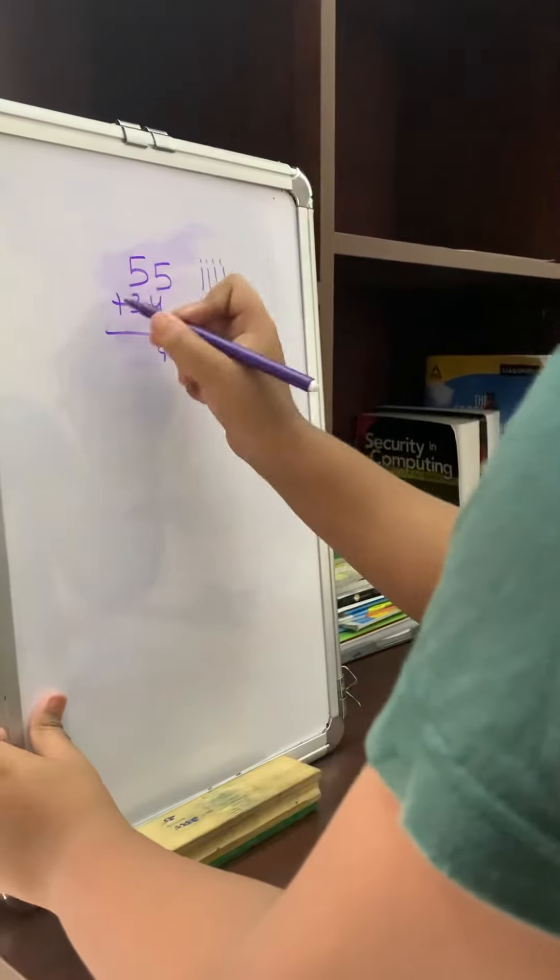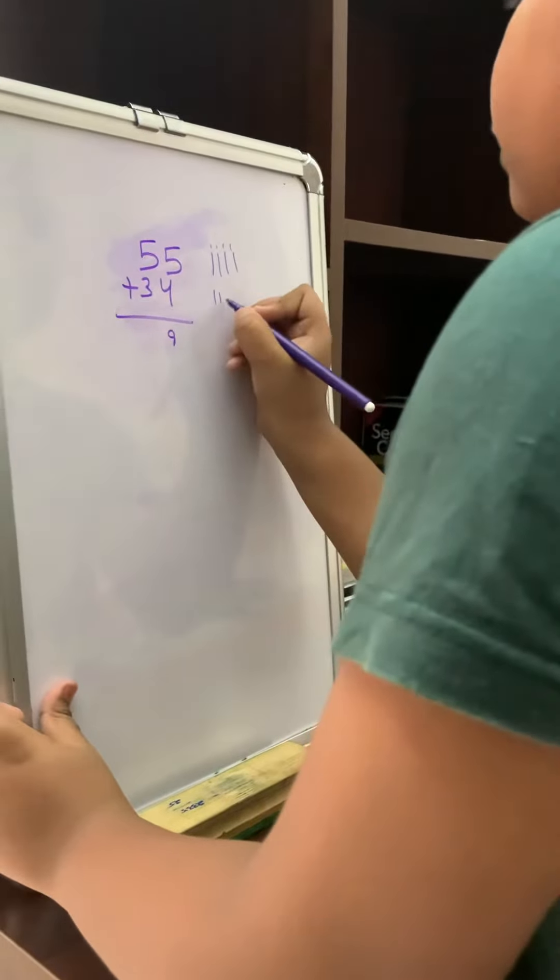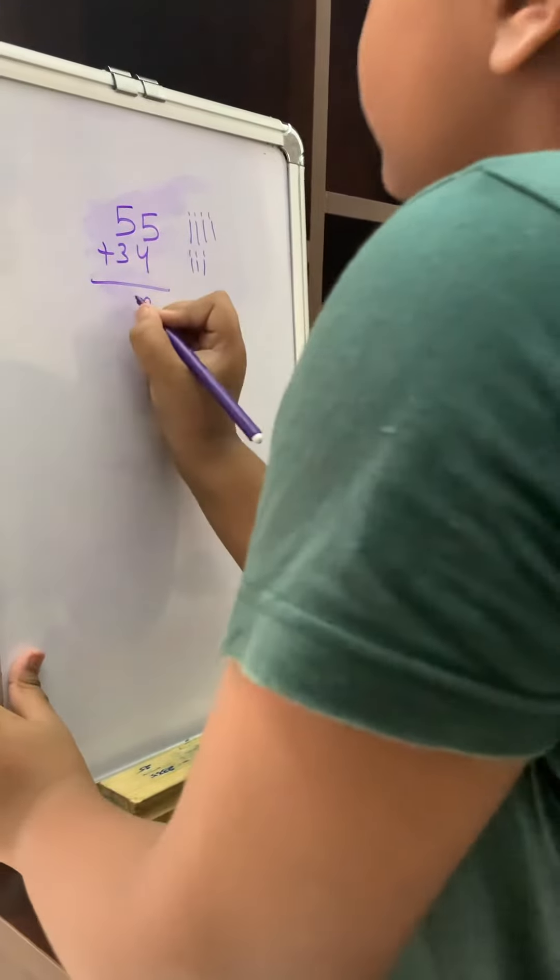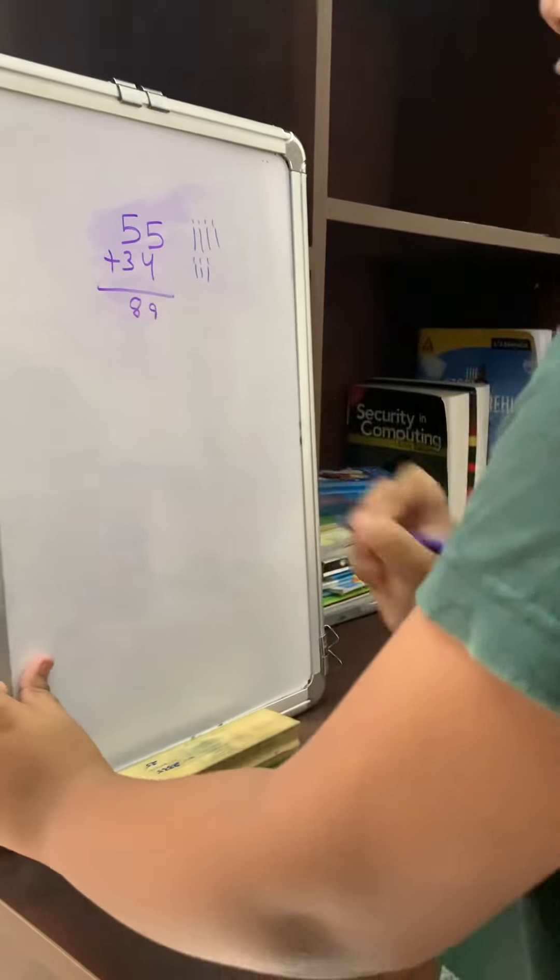Then 5 plus 3 in the tens place. Counting: 1, 2, 3, 5 after 6, 7, 8. So here, 8. The answer is 89.